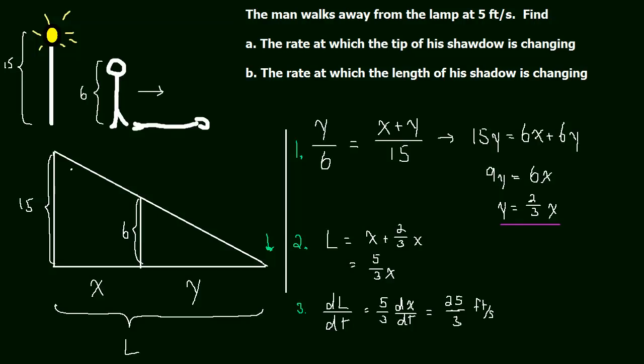Not too difficult. I mean, it wasn't terribly easy. We had to set up this proportion. And the hardest part, in my opinion, is realizing that this tip is changing at the same rate in which L is changing. So creating that relationship between L and x is probably the hardest part. And even if you did create that relationship, then you'd still have to use this proportion to solve for y.